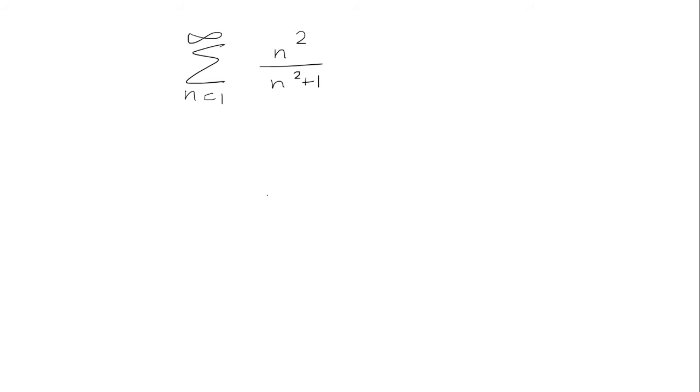Now, when you're looking at a sum, it's always good to find the limit of the inside. So if I take the limit as n approaches infinity of n squared over n squared plus 1, we end up getting 1 as the limit.